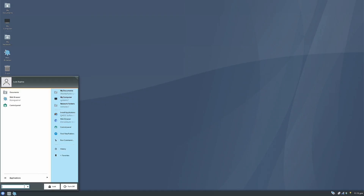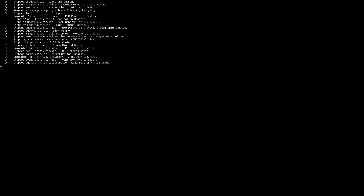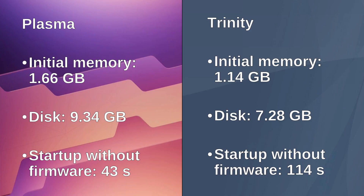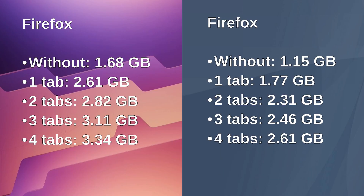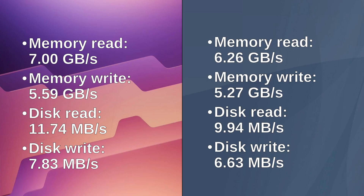Let's analyze and compare the results of both versions to see which is worth installing. Regarding initial memory consumption and disk installation size, Trinity stands out for its savings, but in terms of boot time, Plasma is better. Regarding memory consumed per Firefox window, Plasma uses 445 megabytes on average per window, while Trinity uses only 365 megabytes. Everything pointed to Trinity being more efficient, but when analyzing CPU, thread, and mutex performance, Plasma was superior in every way. This balanced things out, but everything changed when looking at memory and disk read and write performance — Plasma is once again superior.